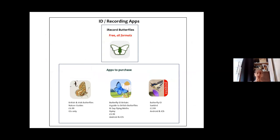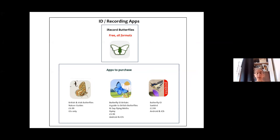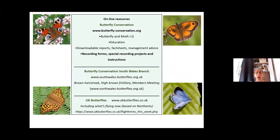There are a number of ID apps. The three on the bottom I haven't used and are priced. But Butterfly Conservation and iRecord have a free app you can download on all formats — it has summaries of descriptions and photos of each butterfly so it's helpful for identification, and you can record directly onto the app. The Butterfly Conservation website is also full of useful information on ID and education, with loads of information you can download.